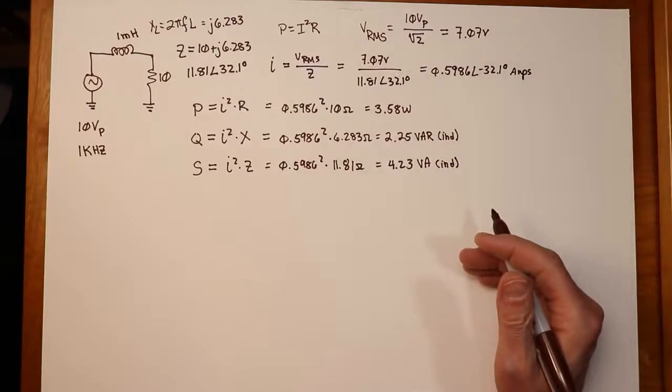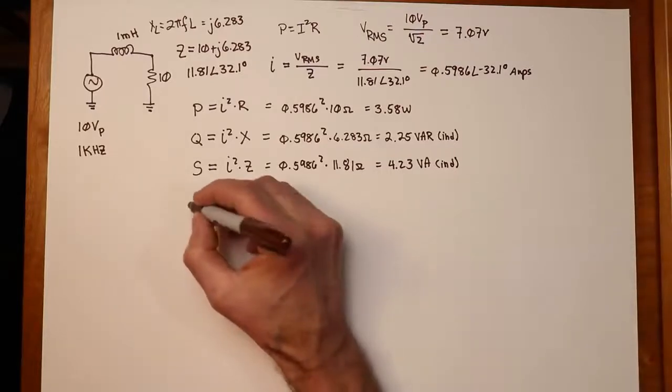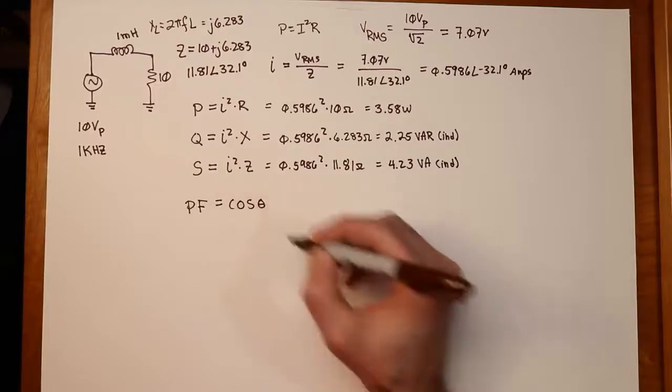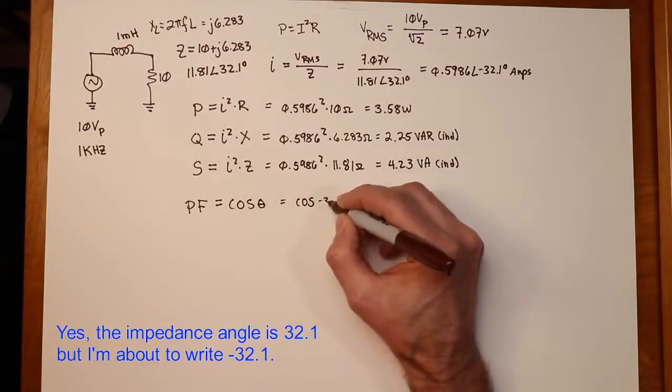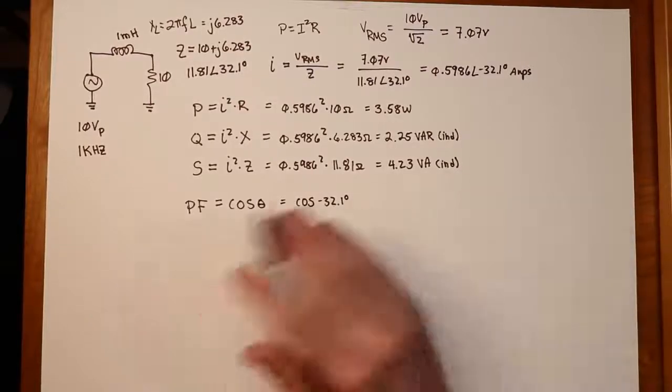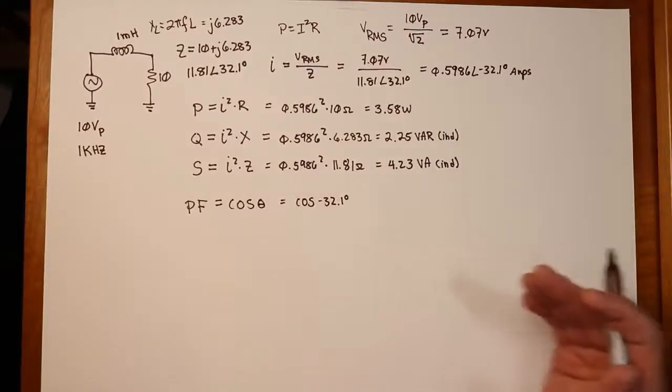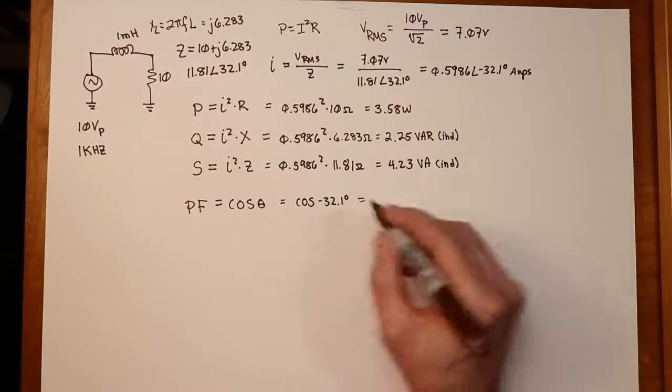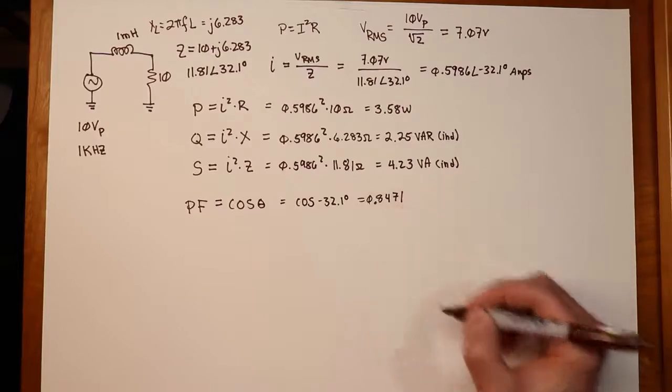Okay. Now, one thing we might be interested in determining here would be something like the power factor. Now, there's a couple of ways you can approach this. Remember, power factor can be defined in terms of the cosine of the impedance angle. Our impedance angle is 32.1 degrees. Whether it's positive or negative, as far as the magnitude of the result is concerned, won't make any difference because cosine is symmetrical around zero. The minus sign just tells us whether it's an inductive or a capacitive power factor. Basically, a leading or a lagging power factor. Lagging being an inductive power factor. So when we throw those numbers in, we're going to get 0.8471. That would be a lagging power factor.